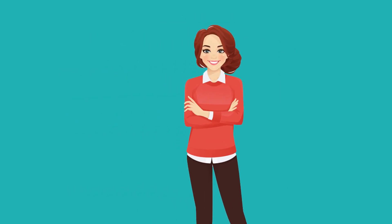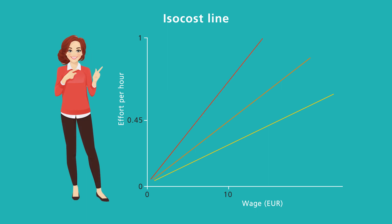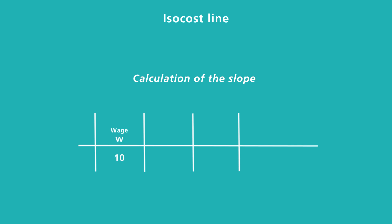To find the optimal relationship between costs and labor input, you need ISO cost lines for Maria's effort input. These are straight lines that represent all combinations where Maria's labor input costs the same. The steeper the line, the lower the wage costs for the same labor input. To calculate the slope, you need the hourly wage w and Maria's effort e — the units of work she would do in an hour. The slope of the line is e divided by w, and the cost per unit of work is w divided by e. For example, at a wage of w = €10 and effort level e = 0.45, you get a slope of 0.045 and a cost per unit of effort of €22.22.